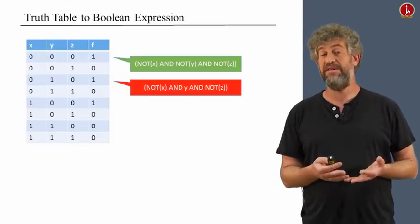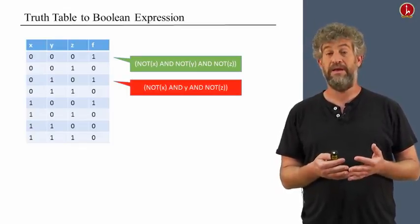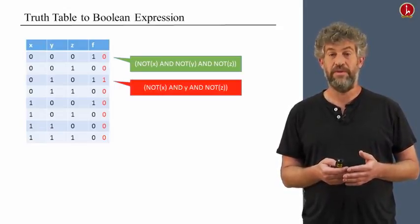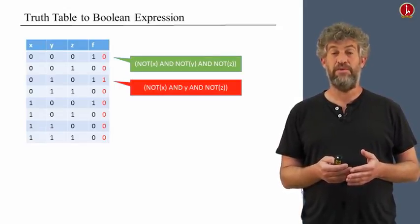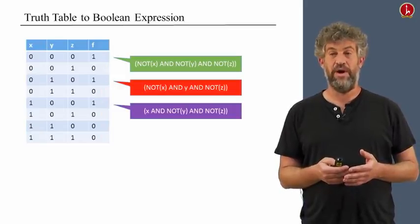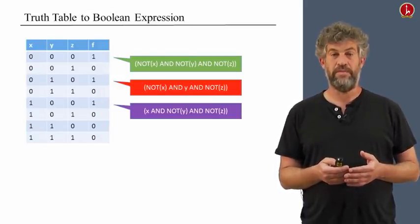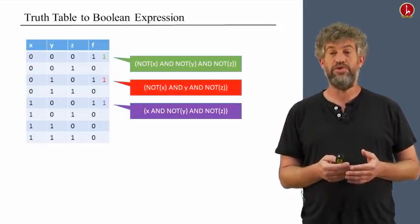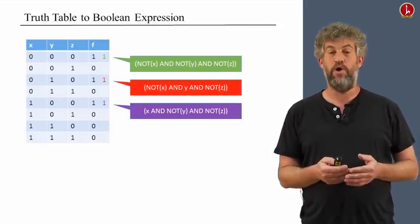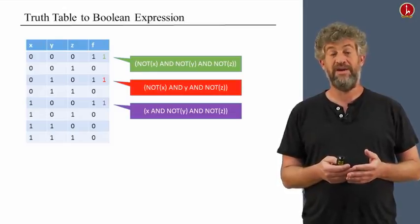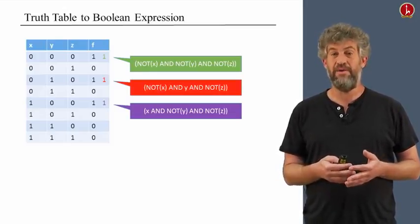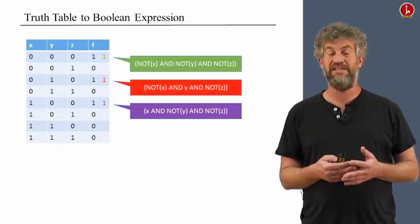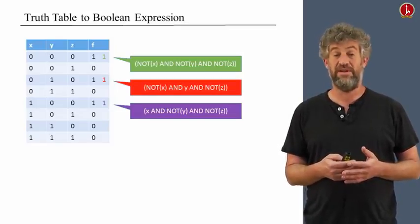Again, this is something that gets a value of 1 only on this row and gets a value of 0 everywhere else. We do that for every possible row that has a value of 1. Now the purple row. Now we have a bunch of different functions that each one of them gets a value of 1 only at its row and gets a value of 0 in all other rows.